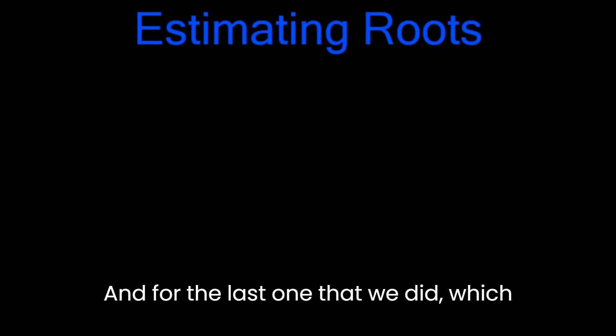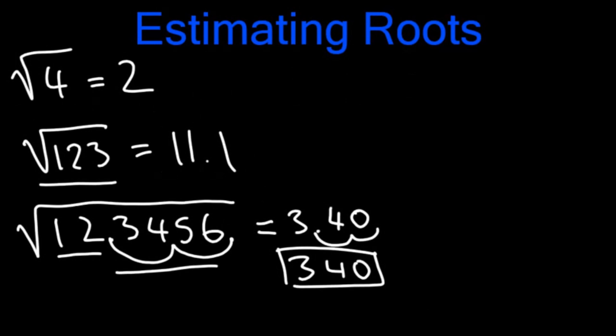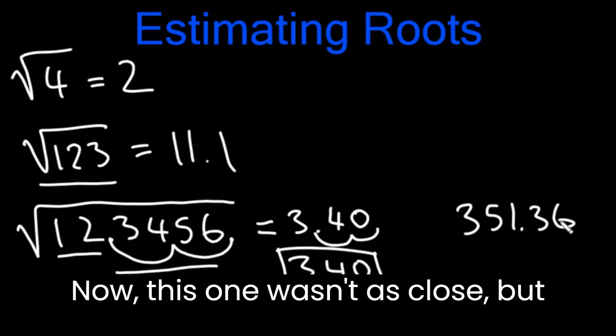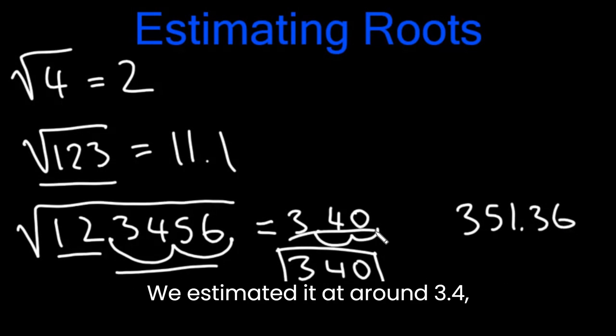And for the last one that we did, which was 123456, the actual square root was 351.36. Now this one wasn't as close, but we estimated it at around 3.4. So if we had put 3.5, we would have gotten 350. So it's pretty close either way.